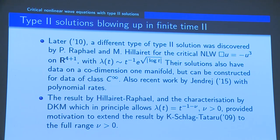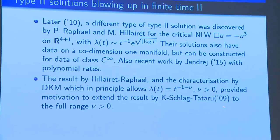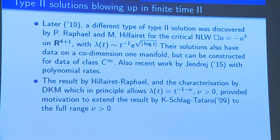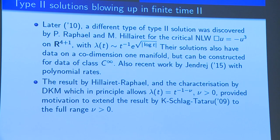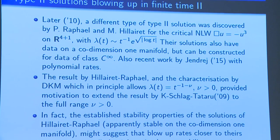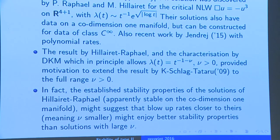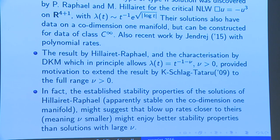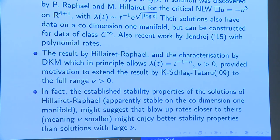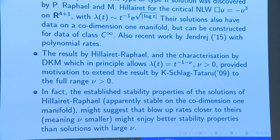This suggested to Schlag and myself that in principle you should be able to extend the results from 2009 to the full range of ν for possible blow-up solutions. This seems even more interesting because solutions with smaller ν — which are closer to the self-similar rate t^{-1} — should somehow be more stable. So you might hope that for solutions of this form you can even establish a co-dimension one stability result.